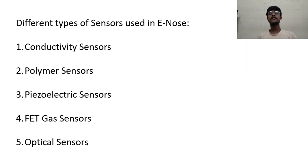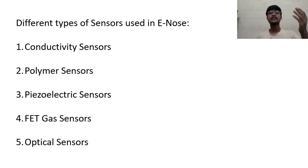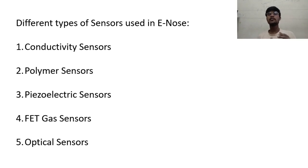Now let's look at what types of sensors are used in the electronic nose. There is a wide range of sensors, including conductivity sensors, polymer sensors, piezoelectric sensors, FET gas sensors, optical sensors, and many more. Each sensor reacts to a different chemical so that the computing system can arrive at a conclusion. I'll specifically discuss the polymer sensor, as it's quite interesting, though all sensors work in a similar manner.